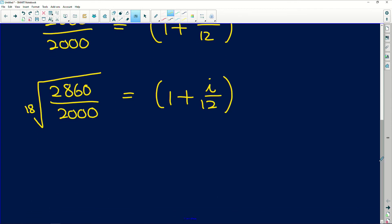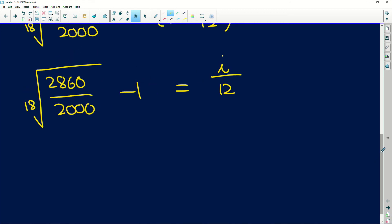So now how do we further isolate I? Well before we can deal with the fraction, we need to take away that 1. If we subtract 1 from both sides, the 1 minus 1 will give us 0. So we've got our lovely 18th root here, 2860 over 2000 subtract 1, and we're going to get I over 12. And so now it becomes really easy to isolate I. We multiply both sides by 12, and that is going to give us our interest rate.